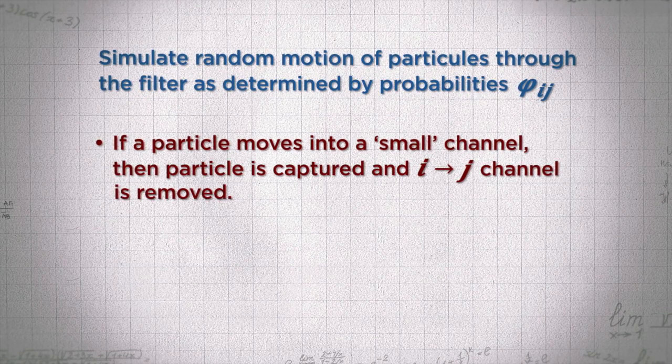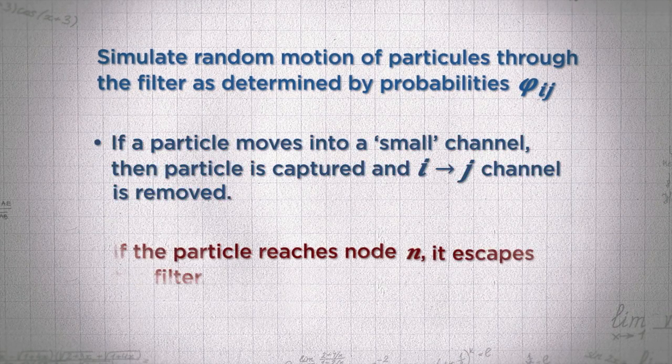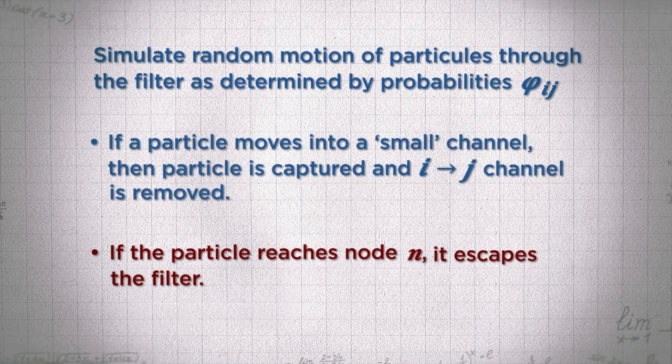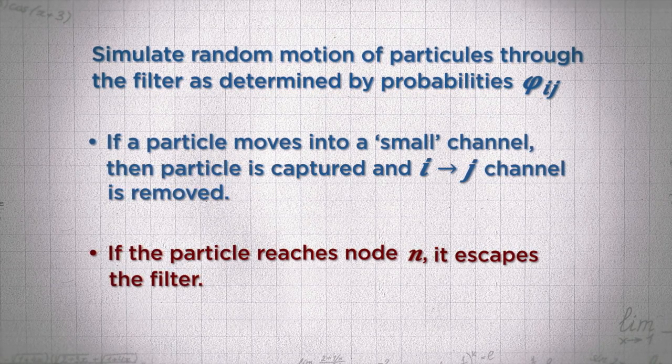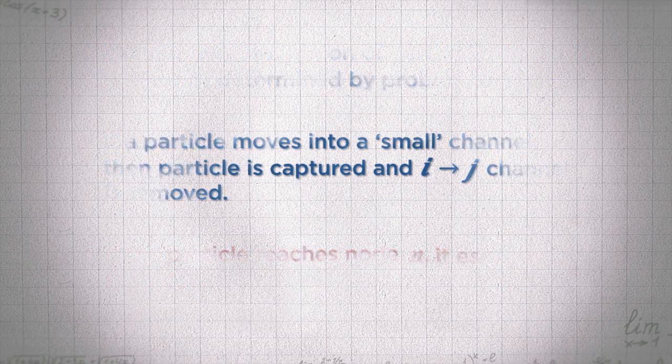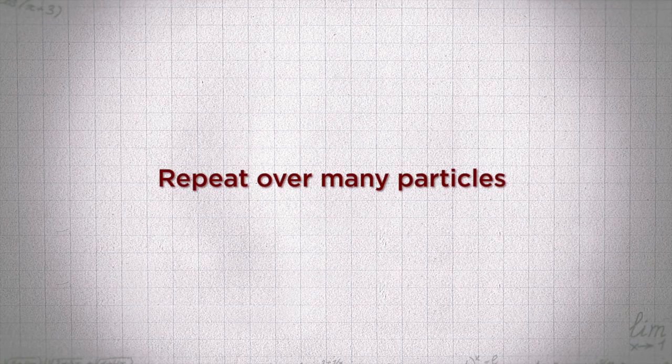If a particle passes through a small channel, it's captured, and that channel goes away, now the filter's different. If it reaches the end of the filter, never having passed through a small channel, it passes all the way through, and we release a new particle. If we continue doing this over and over again, we now can characterize the filter in terms of how it captures particles or allows flow to pass through it.